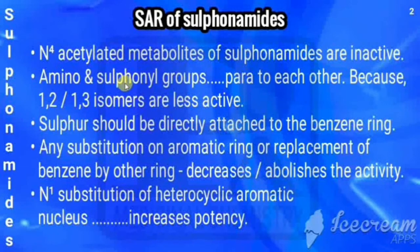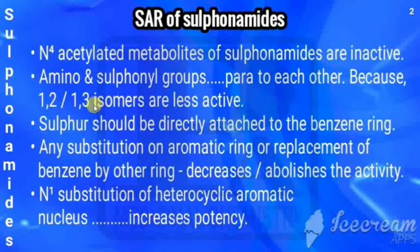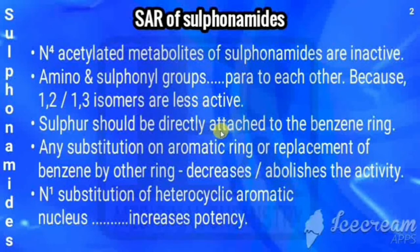The amino and sulfonyl groups should be para to each other. If they are ortho (1,2) or meta (1,3) to each other, the compounds are much less active. Also, the sulfonyl group (SO2) should be directly attached to the benzene ring, with SO2NH in the first position and NH2 in the fourth position.